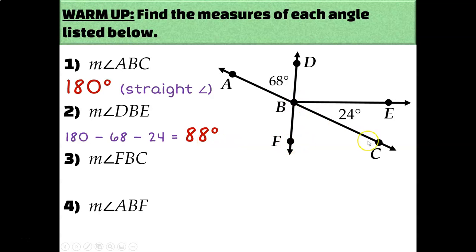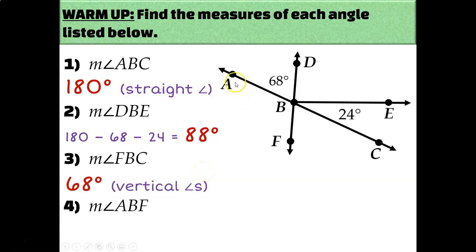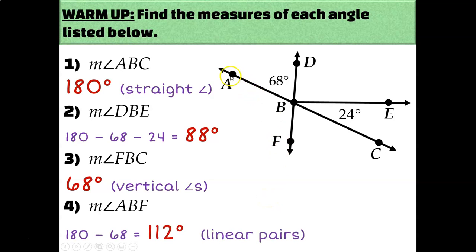What about the measure of angle FBC? It forms vertical angles with the given 68-degree angle, because these two lines intersect and these two angles are non-adjacent angles formed by the intersection of those lines. Therefore, the measure of angle FBC must be 68 degrees. And the measure of angle ABF forms a linear pair with the 68-degree angle — adjacent angles whose non-common sides are opposite rays — so they add up to 180, making angle ABF 112 degrees.